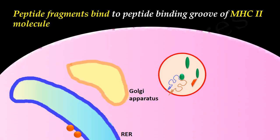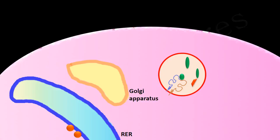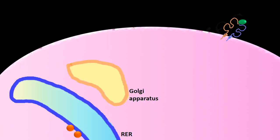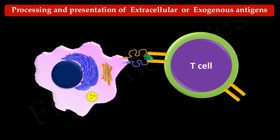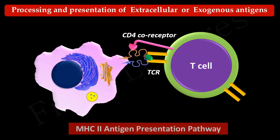The newly formed MHC II–peptide complex is transported to the cell surface. Once on the cell surface, they are presented to T cells. These T cells recognize the peptide displayed by the MHC II molecule via the T cell receptor. Another receptor, known as the CD4 co-receptor, binds to the β2 domain of the MHC II molecule. Since this pathway involves MHC class II molecules, it is also known as the MHC II antigen presentation pathway.